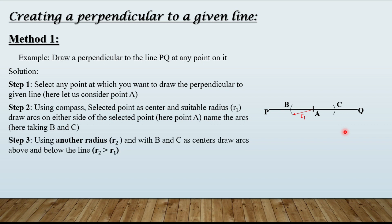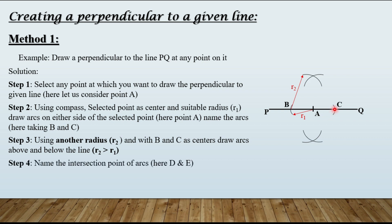Step number three: using another radius R2, and with B and C as centers, draw arcs above and below the line. Note: you have to take a radius R2 greater than the previous one R1. So keeping compass at B, taking radius R2 which is greater than R1, draw an arc above and an arc below, then shift the compass from B to C and draw one arc above and one below. Step number four: name the intersection points of arcs as D and E. Last step: join D and E using a straight line. The line DE is now perpendicular to the given line PQ.